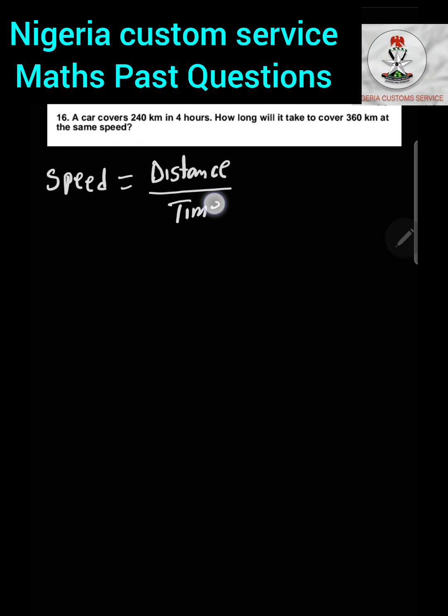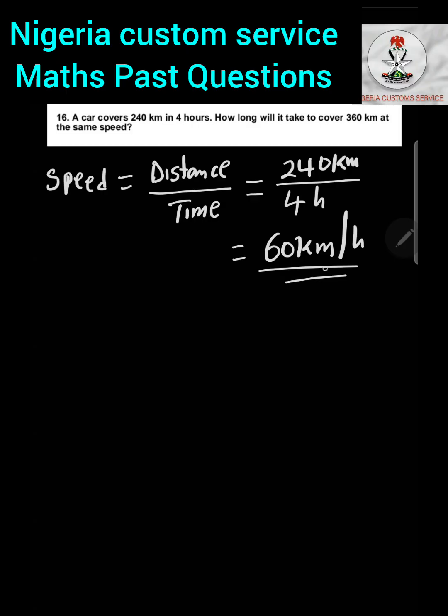Question 16: A car covers 240 kilometres in four hours. How long will it take to cover 360 kilometres at the same speed? First we find the speed. The formula for speed is distance over time. The car covers 240 kilometres in four hours, so speed equals 240 divided by 4, which is 60 kilometres per hour.